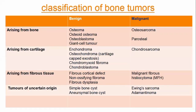We have a table here showing the classification of bone tumors. The tumors are divided into benign and malignant. We have those arising from bone, those arising from cartilage, those arising from fibrous tissue, and finally those tumors of uncertain origin.